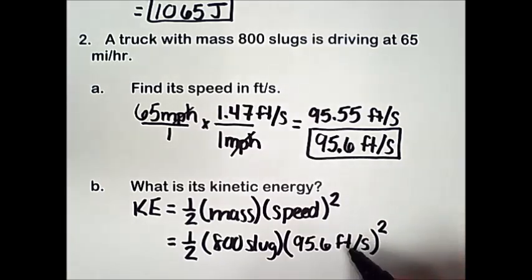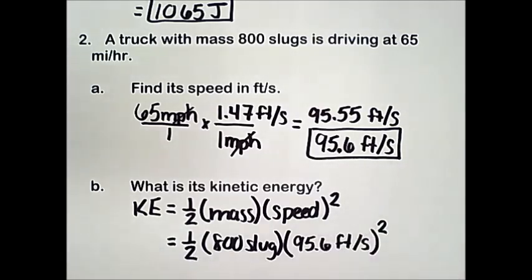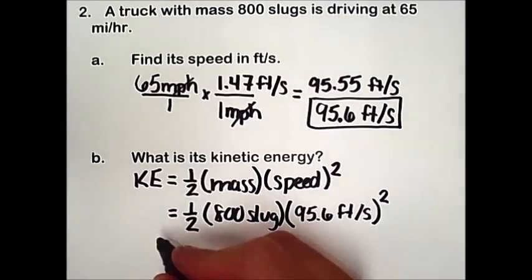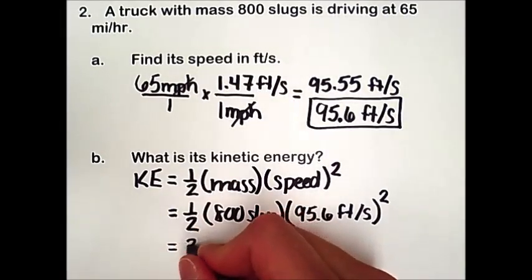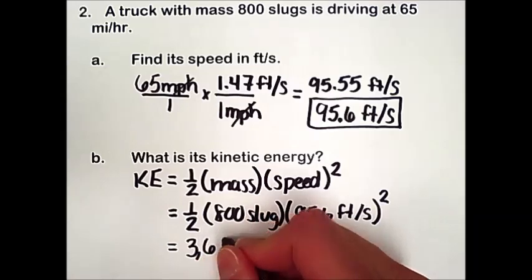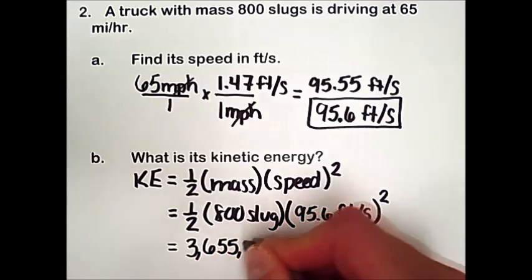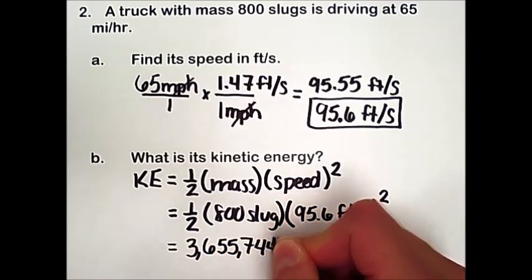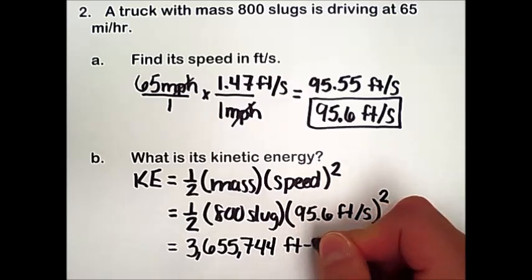When we square that and multiply by 800, and then multiply by 1 half, we end up with approximately 3,655,744 foot-pounds.